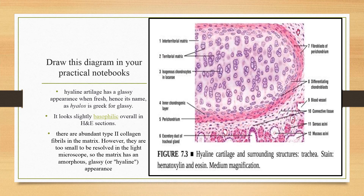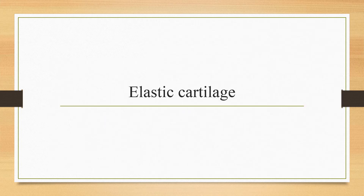This is the diagram you need to draw in your histology practical notebooks. Draw the chondrocytes clearly in the form of isogenous groups, and draw a clear picture of the perichondrium — the layer of dense irregular connective tissue surrounding the hyaline cartilage. Draw a neat and clean diagram of the trachea in your histology practical notebooks.